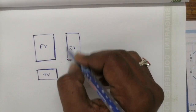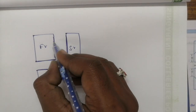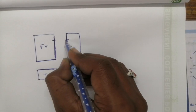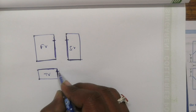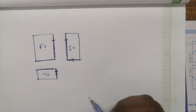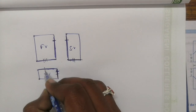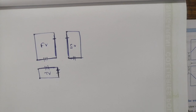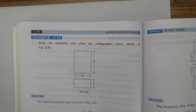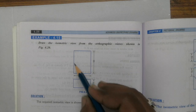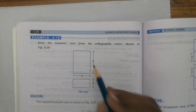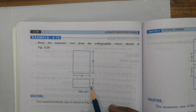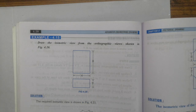The height of the front view will be equal to the height of the side view, and this length will be equal to this length. This is very important when you are drawing an isometric view, so keep this in mind. The dimensions of the front view are 30 by 50, and the top view are 30 by 15.